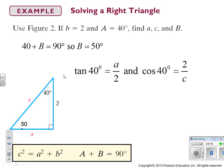My suggestion is always use the information you have. So, I have angle 40 side of 2. If I want to find A, that is opposite over adjacent, that's tangent. Tangent of 40 degrees is A over 2. Cosine of 40 degrees is adjacent over hypotenuse, 2 over C.